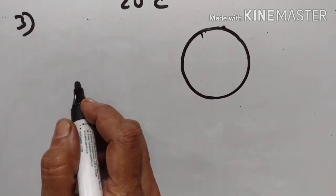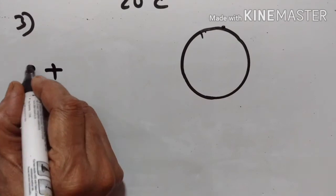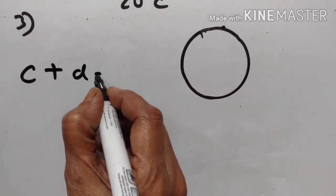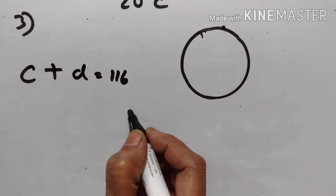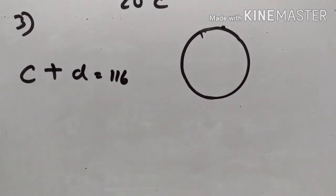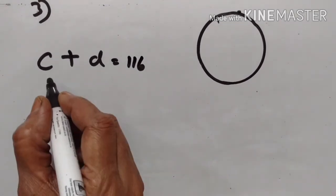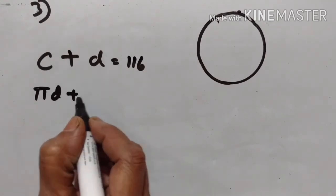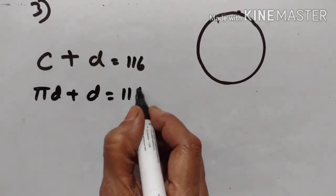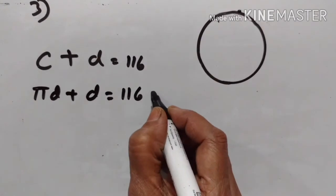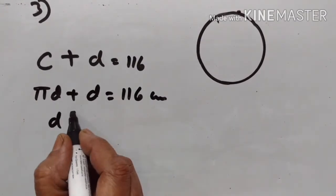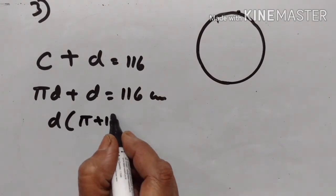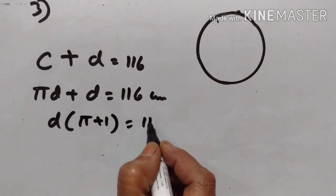Third problem. The sum of the circumference and diameter of a circle is equal to 116 cm. Find its radius. Circumference is equal to πd (or 2πr), so πd + d = 116 cm. Taking d as common: d(π + 1) = 116 cm.